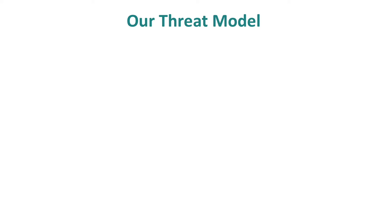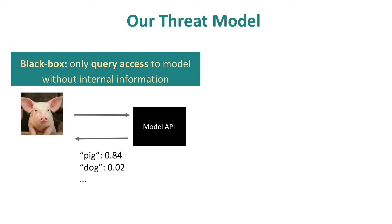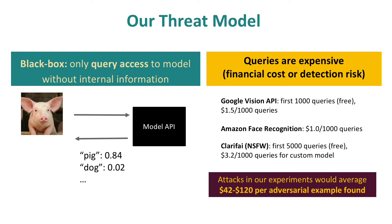Next, I'll introduce the threat model in the paper. We assume adversaries only have query access to the model, and the model can provide predicted labels with confidence scores for the submitted queries. However, queries to the model are expensive because they're associated with some costs, such as financial cost. For three public image recognition APIs, the baseline attacks in the paper would on average cost $40 to $120 per adversarial example found.